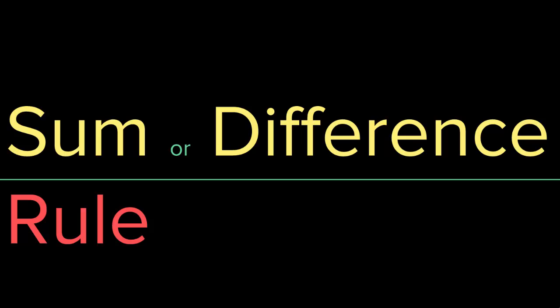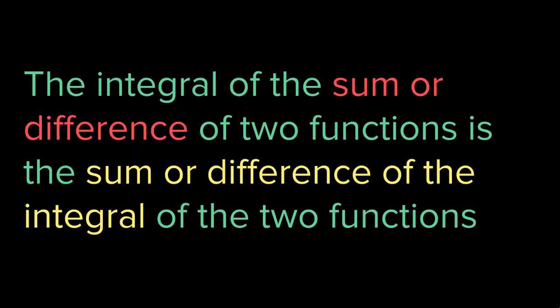The third rule is the sum or difference rule. What happens when we add two or more functions together or subtract them and we want to find the integration? The integral of the sum or difference of two functions is the sum or difference of the integral of the two functions. When we have a string of functions that are added, subtracted, or a mixture, you take the integral of each function and then add or subtract as in the original function.